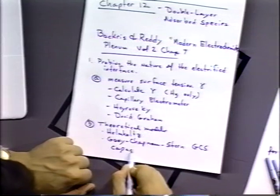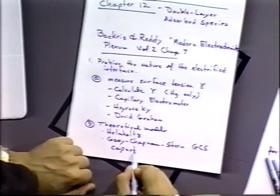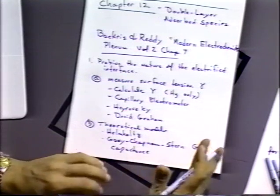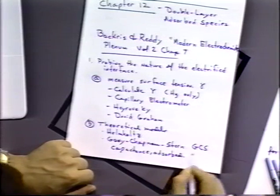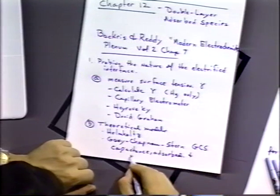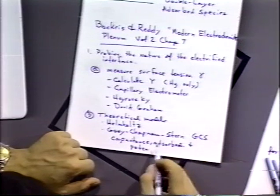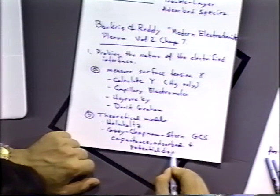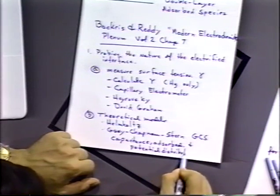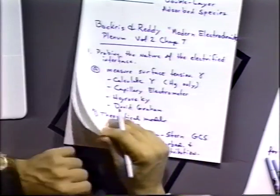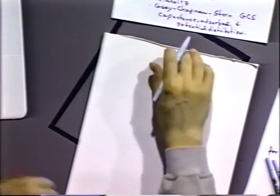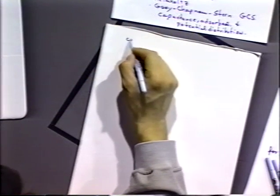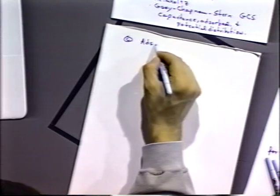The GCS model tries to explain things such as the effect of capacitance — how we can predict what the capacitance is of a particular surface — the amount of adsorbed material, and particularly important: what the potential distribution near the electrode surface is. We're also going to probe the nature of the interface by thinking about adsorption isotherms.